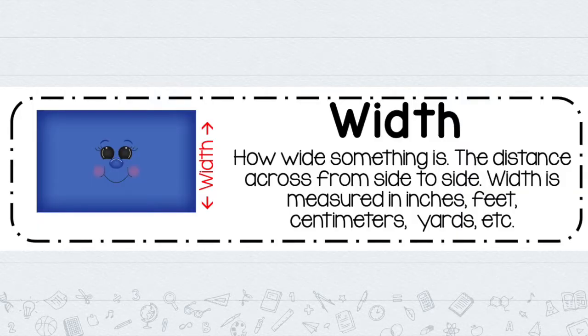The other number is going to be the width. The width is how wide something is — it's the distance that goes across, side to side. Just like the length, the width can come in many different types of measurements: inches, feet, centimeters, yards, and so on. The word 'width' also starts with W, so you can think about 'wide' — width is how wide something is. So length is how long something is, and width is how wide something is.